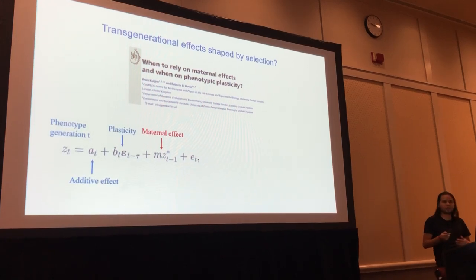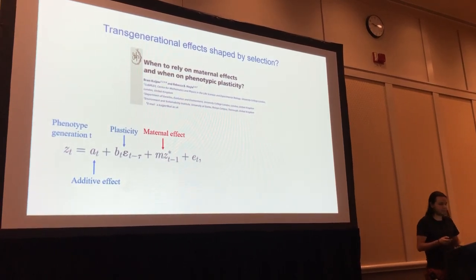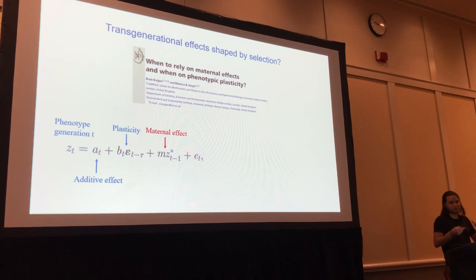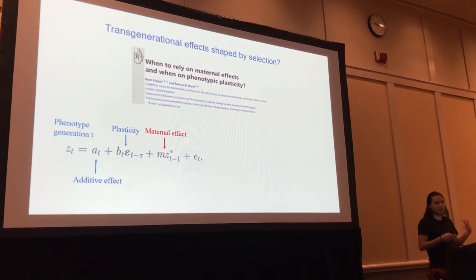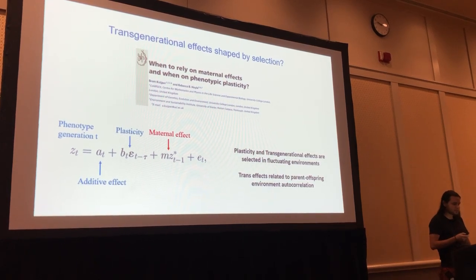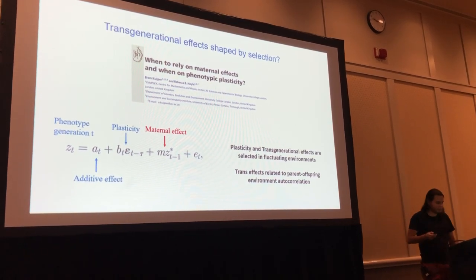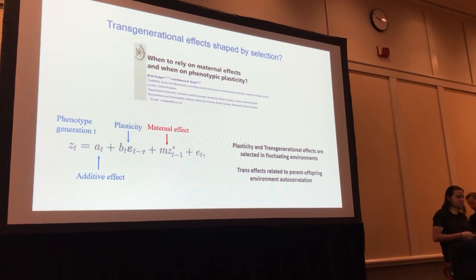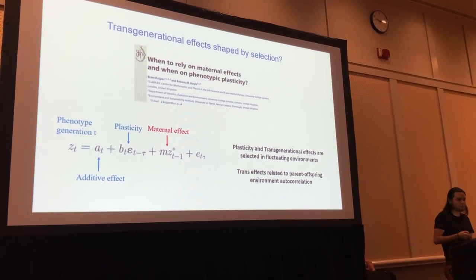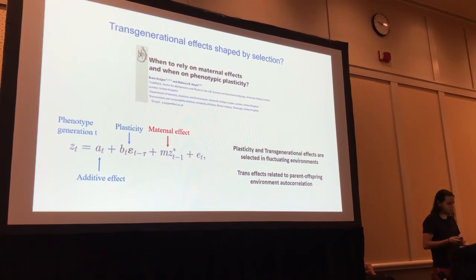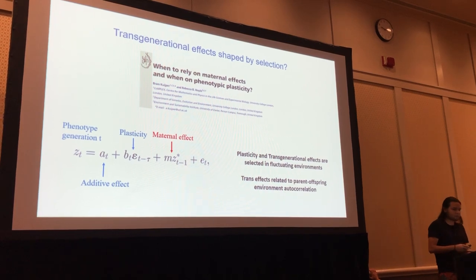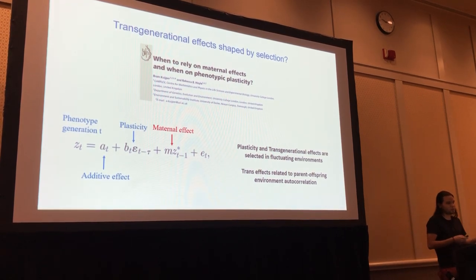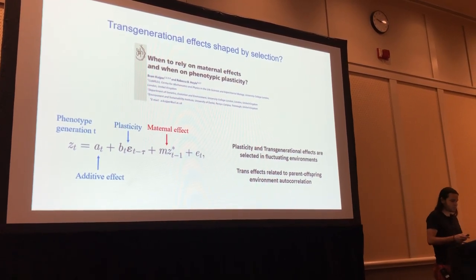There is only one model that we know so far that includes both plasticity and maternal effects as a trait that can change over time, be modified by selection, and actually evolve over time. Based on this model, we learned a couple of important things: both plasticity and transgenerational effects can be expected to evolve in fluctuating environments compared to constant environments. In addition, not only fluctuation is important, but also the autocorrelation between the environment of the parent and offspring seems to be important for the evolution of these effects.